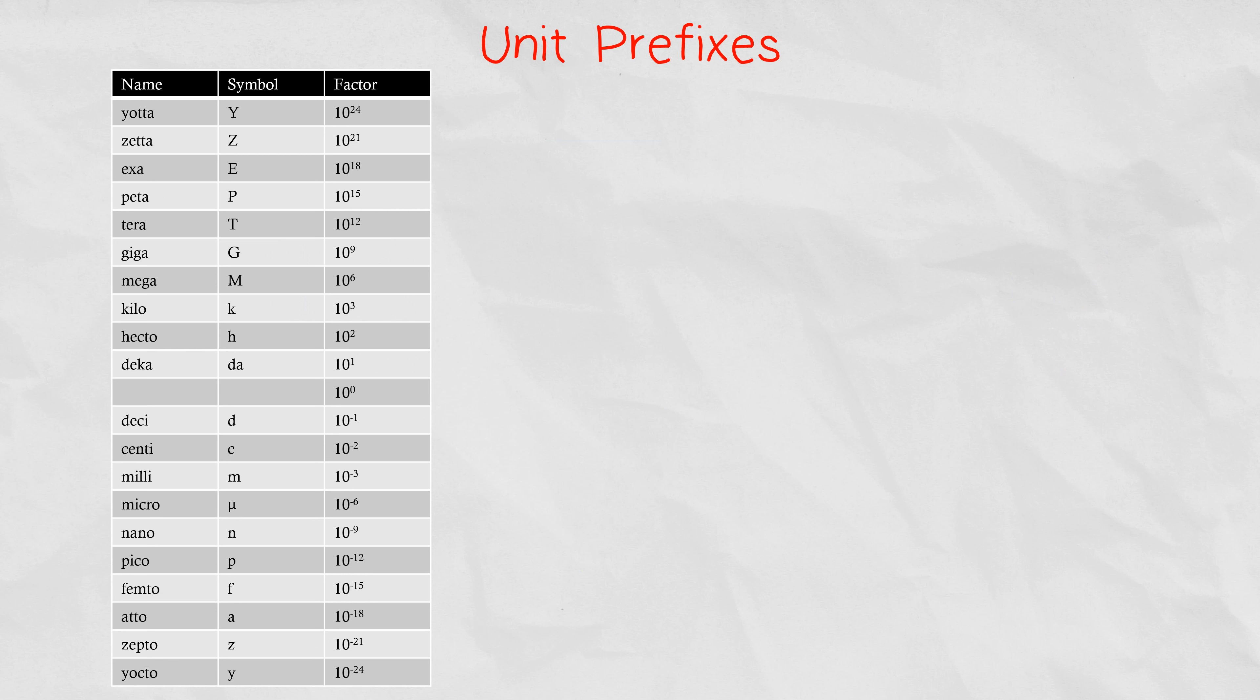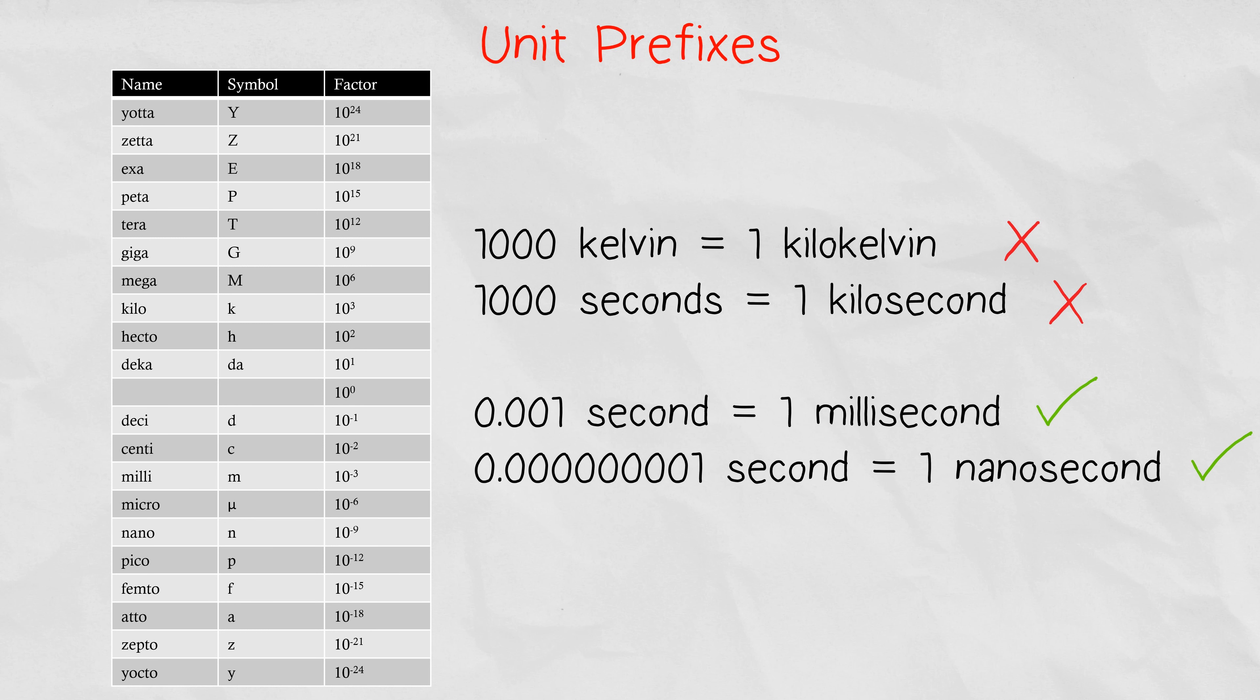Now some units don't really make good use of those prefixes. Like a thousand kelvin isn't really referred to as a kilokelvin, or a thousand seconds isn't really referred to as a kilosecond. Even though it's technically right, it isn't commonly used in real life, but you will sometimes see milliseconds, or microseconds, used as a unit of time measurement.